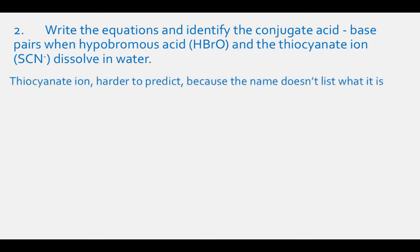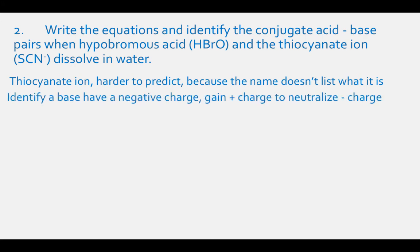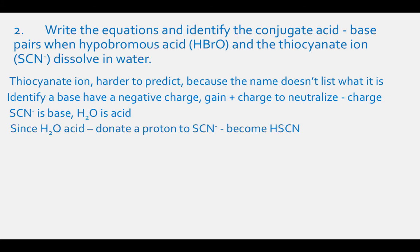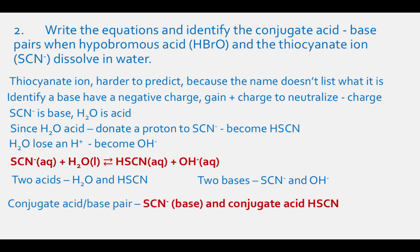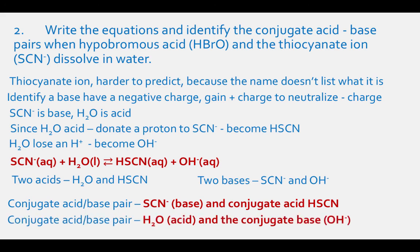For the thiocyanate ion SCN-, it is harder to predict whether it is the acid or base from the name. An easy way to identify a base is that it might have a negative charge, because it will gain a positive H+ ion to neutralize that negative charge. SCN- is a base, and water will be the acid. Water donates a proton to SCN-, which becomes HSCN, and H2O becomes OH-. The equation is: SCN- (aqueous) + H2O (liquid) in equilibrium with HSCN (aqueous) + OH- (aqueous). The two acids are H2O and HSCN; the two bases are SCN- and OH-. The two conjugate acid-base pairs are SCN-/HSCN and H2O/OH-.